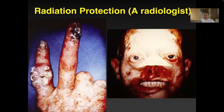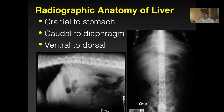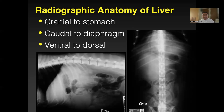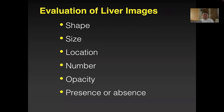In early times everybody was using fluoroscopy with direct exposure to their faces and fingers — not fun. For liver location on radiograph: the stomach is adjacent, so I use the stomach axis to say big or small. You must look in the craniodorsal area next to the right kidney — that is liver too. Evaluate shape, size, location, number, and opacity — presence or absence. That is the key to evaluating the radiogram.